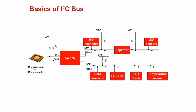The I2C bus is a two-wire bus that is used for communication between a microprocessor and peripheral chips such as temperature sensors, EEPROM, IO expanders, fan controllers, etc., that also use the I2C communication protocol.